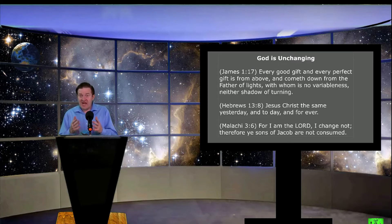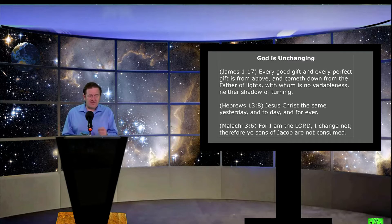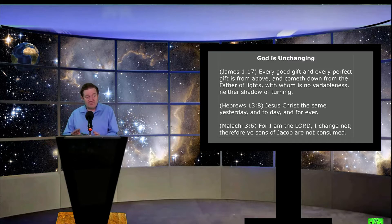Another thing we know from James 1, verse 17 is that God is unchanging. He's the same. Every good and every perfect gift is from above and cometh down from the Father of lights, with whom is no variableness, neither shadow of turning. Isn't that a wonderful promise?